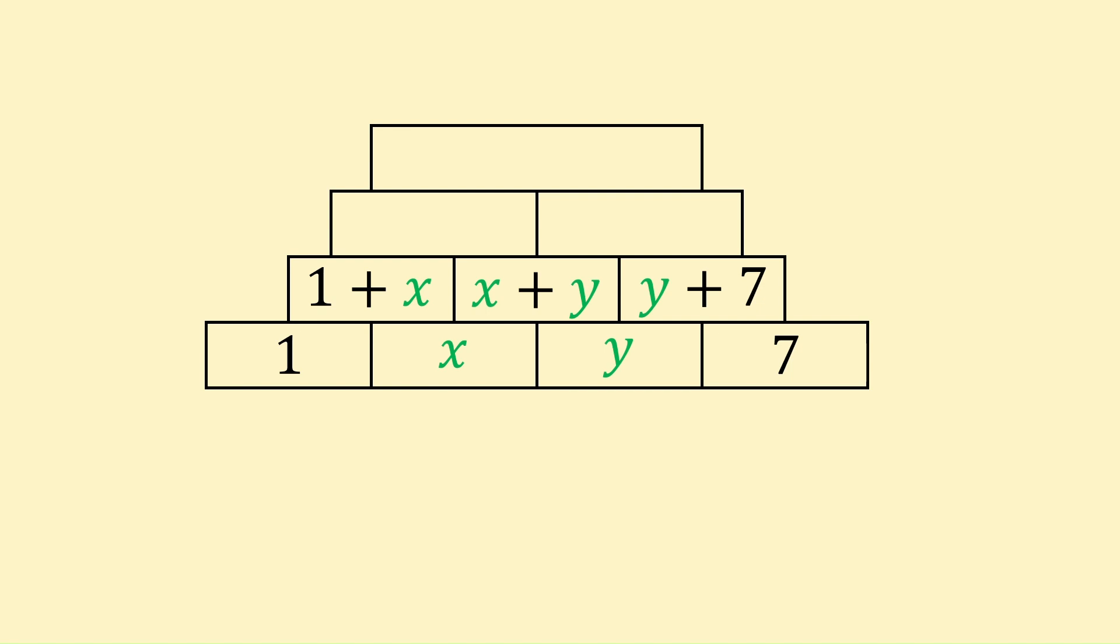For the row above, let's just repeat the process. 1 plus x plus x plus y becomes 1 plus 2x plus y. And x plus y plus y plus 7 becomes x plus 2y plus 7. To get the top block of our pyramid, we just need to add these two together, giving 8 plus 3x plus 3y.